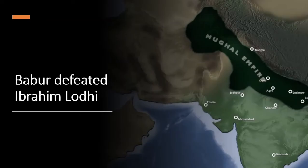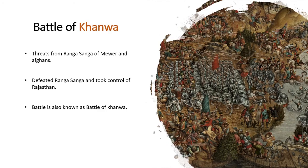Therefore Babur defeated Ibrahim Lodhi and the Delhi Sultanate, and entered the subcontinent. After the victory over the Delhi Sultanate, Babur received threats from Rana Sangha of Mevar, Rajasthan, and Afghans ruling eastern India. Babur attacked and conquered Rajasthan by defeating Rana Sangha of Mevar on March 16th, 1527. This battle is also known as the Battle of Khanwa.